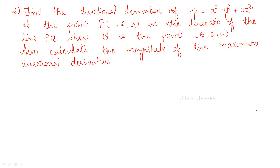In this problem, the direction vector was given directly. In the next question, instead of giving that vector, you are given some other clues. Find the directional derivative of phi at point P = (1, 2, 3) in the direction of the line PQ, where Q is the point (5, 0, 4). So how will you find PQ?